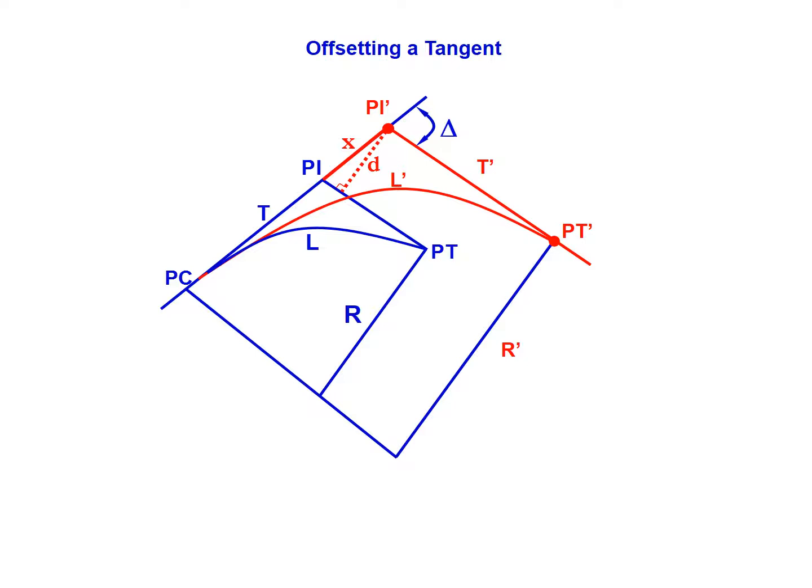The way this is performed is by looking at the distance the tangent is moved parallel. This only applies to tangents that are shifted in a parallel direction, and they can either be effectively lengthening the tangent length or shortening it. In this image we see it being lengthened by moving it a parallel distance d, and along the tangent will be the distance x.